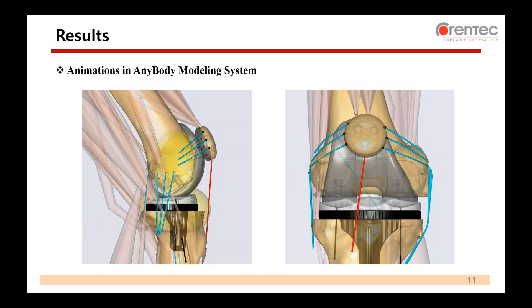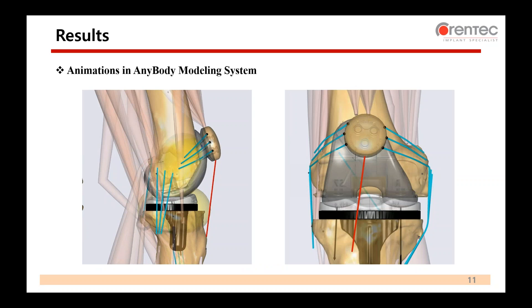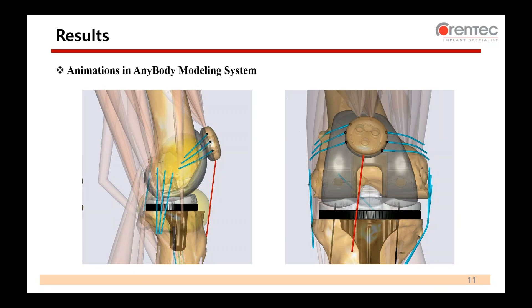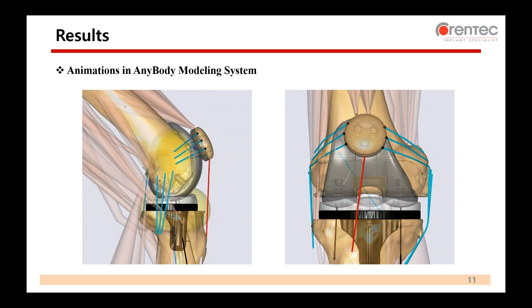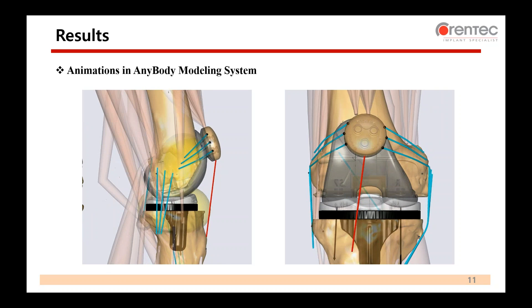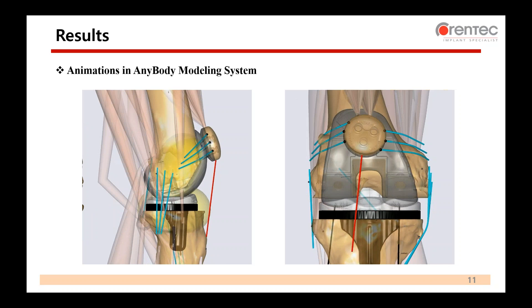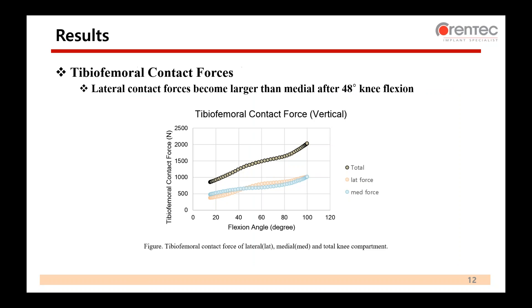From this slide, you will see examples of simulation results. You can see animations of the TKR musculoskeletal model in the AnyBody Modeling System. Here we have tibiofemoral contact force results. The black circle data points show total contact forces. Lateral contact forces are shown as orange circles and medial as blue circles. The results show that lateral forces become larger than medial after 48 degrees of knee flexion during squatting.